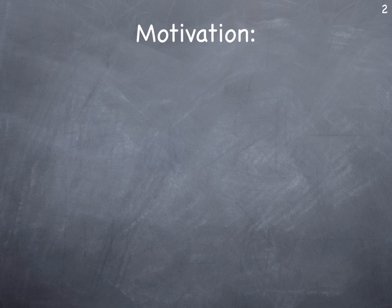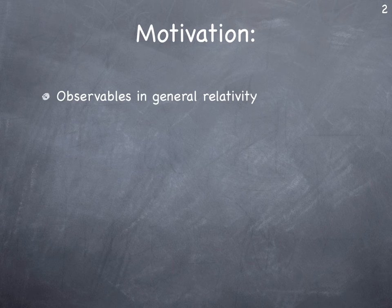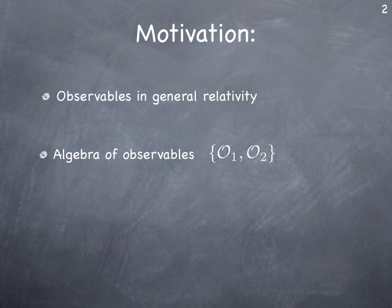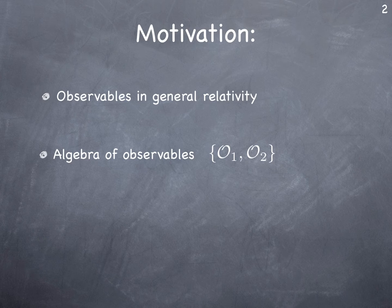Let me give a brief motivation for this research. We are interested in observables for general relativity. At the classical level, they enter in the canonical formalism, where these observables are essentially phase-space functions which Poisson commute with the constraints of your theory — so they are gauge-invariant objects. In the Hamiltonian formalism, we are interested in an algebra of observables: we want to compute the Poisson bracket between two observables O1 and O2, and see whether that closes or has some nice structure.